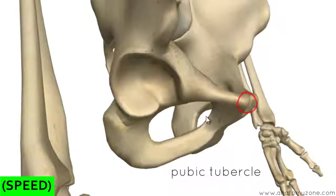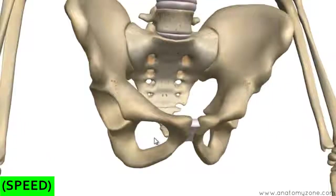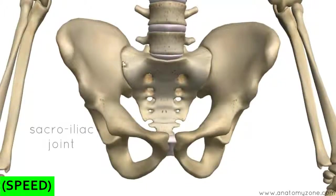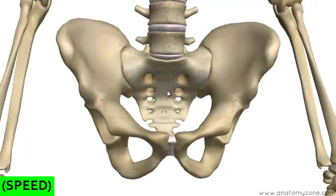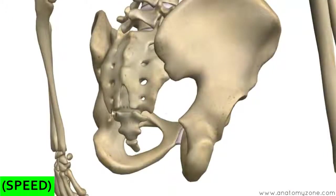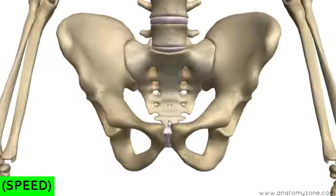Those are the features of the pelvic bones — the hip bones, the os coxa. At the back you've got the sacroiliac joints, at the front the pubic symphysis, and the sacrum articulates above with the fifth lumbar vertebra and below with the coccyx. Next I'll do a quick tutorial on the sacrum and the coccyx.